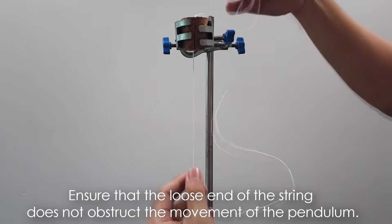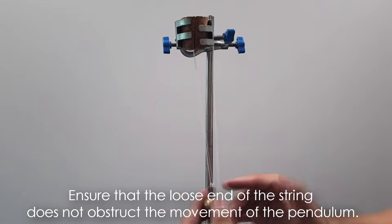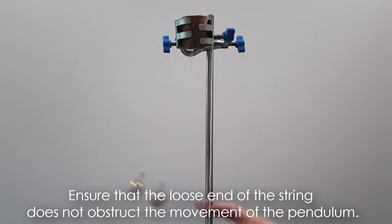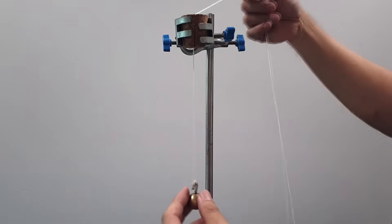If the loose end you did not put it properly, it might interfere with the swing or oscillation. So what you need to do is just to make sure it's out of the way, put it at the back of the retort stand.